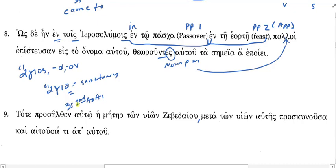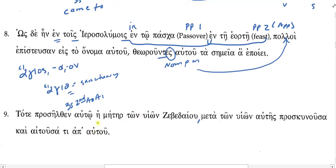So when it's third singular, what are my three possible subjects? He, she, or it. So my subject might be a feminine noun that's nominative. Do you see a feminine noun that's nominative here? Yes — you see 'hey mate air,' that's the lexical form, meaning 'mother.' And then 'tone we own' — 'of Zebedee' — genitivally modifying 'the mother.' So the mother of the sons of Zebedee — she was the one who came up to him.